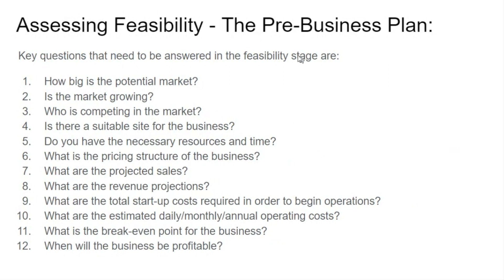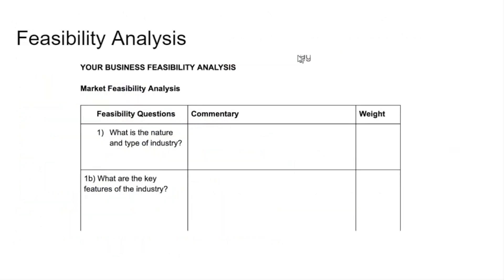In the course's D2L documents, you'll find these basic questions laid out in a template. This template includes a weight section — you can assign importance to each question, for example, 20% of the decision based on one question or 2% on another. That way you get a better sense of how important each issue is relative to the whole.